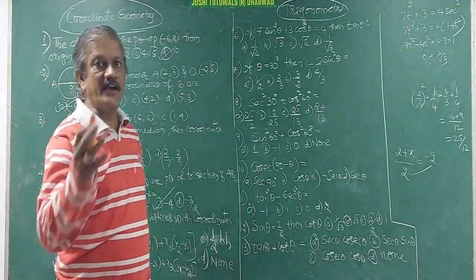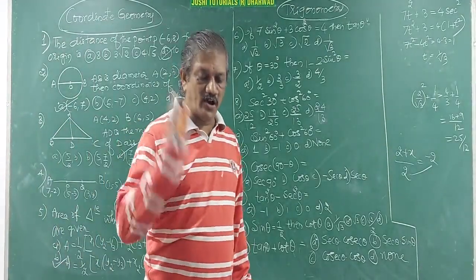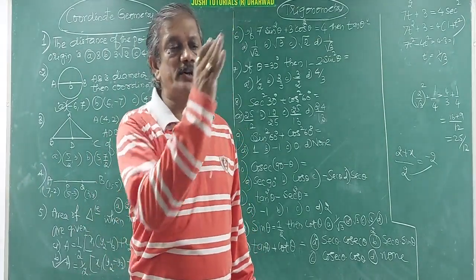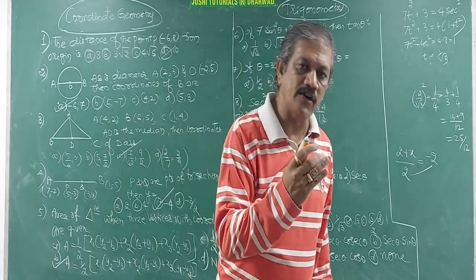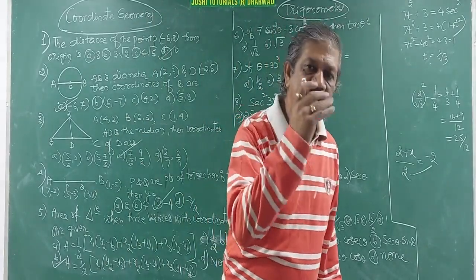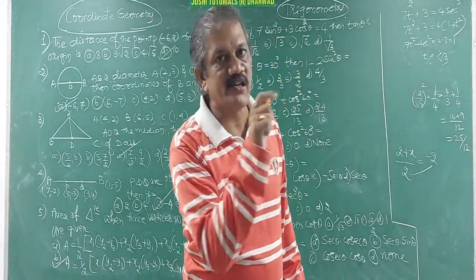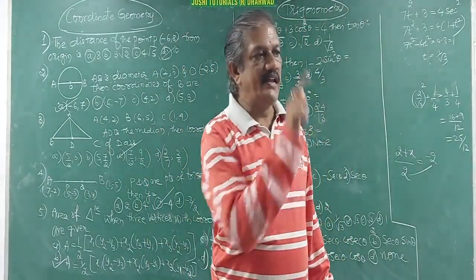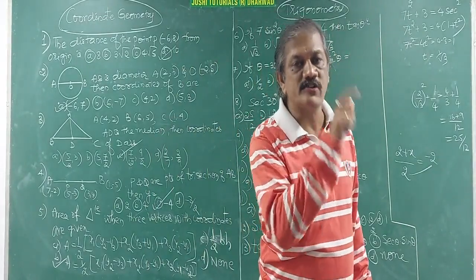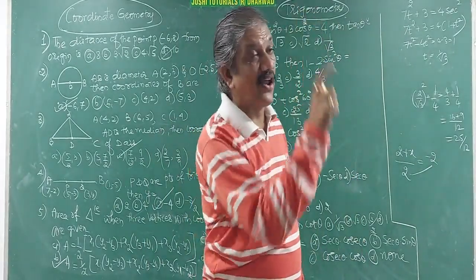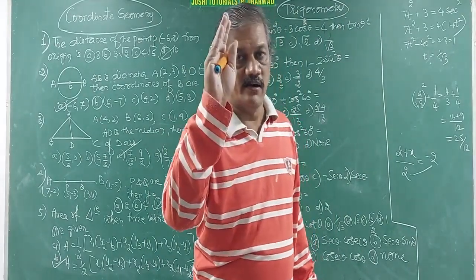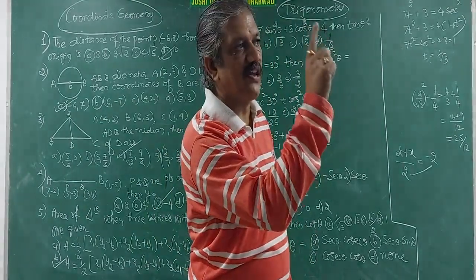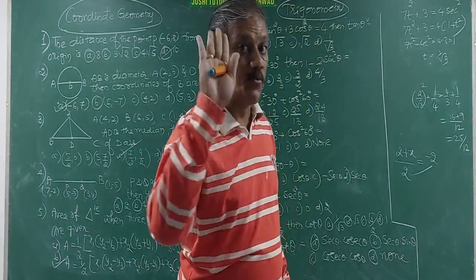Now moving to trigonometry. You must remember all the formulae. Sin θ = opposite/hypotenuse, cos θ = adjacent/hypotenuse, tan θ = opposite/adjacent. The reciprocals: cosec θ = 1/sin θ, sec θ = 1/cos θ, cot θ = 1/tan θ. Also remember the standard angle table for 0°, 30°, 45°, 60°, 90°.